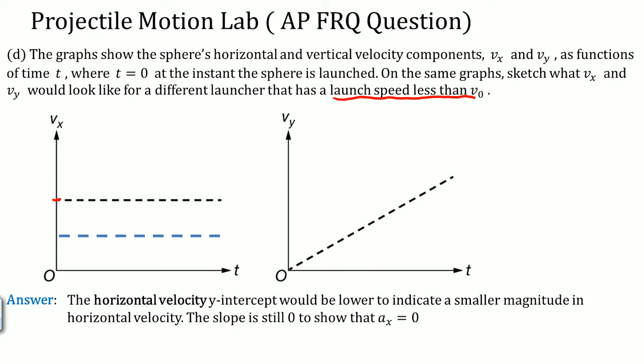First of all, your velocity in the x direction will just be lower. Let's say this is the value of five meters per second. This is now three meters per second. It indicates that it would be a smaller magnitude in the horizontal velocity, and the slope is still zero to indicate that there is no horizontal acceleration.